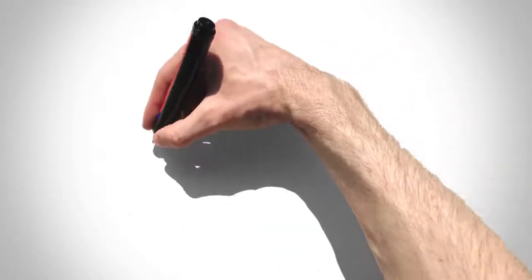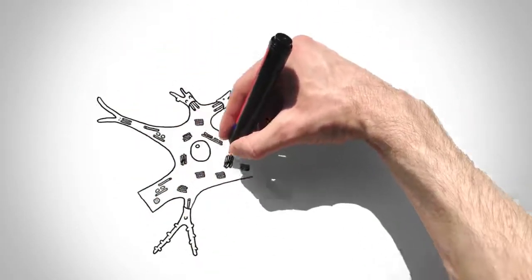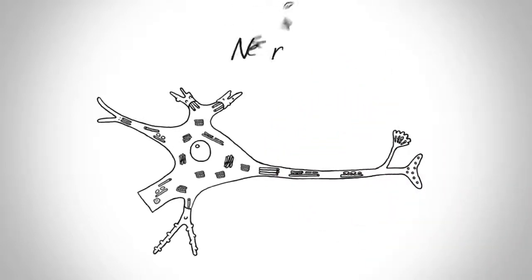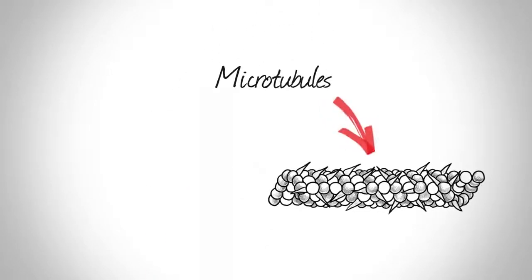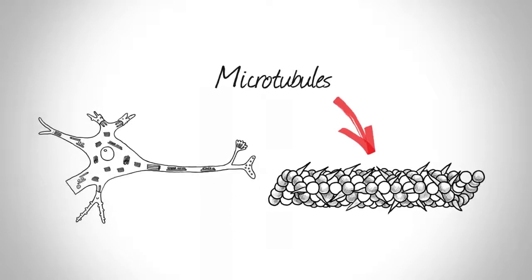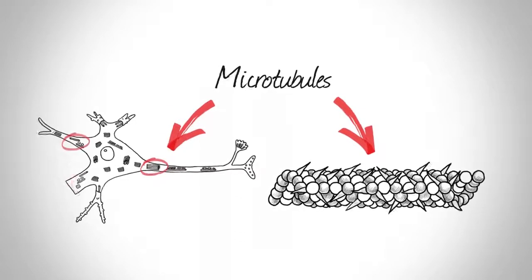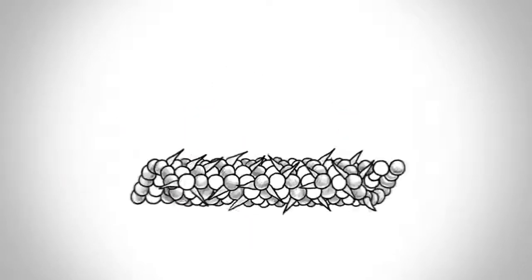A neuron, otherwise known as a nerve cell, allows for the communication of information between other neurons throughout the body. On average, the human brain contains 1 billion neurons. Microtubules provide structural support for our neurons. Each neuron is made up of many microtubule bundles which are held together by strong tau bonds.